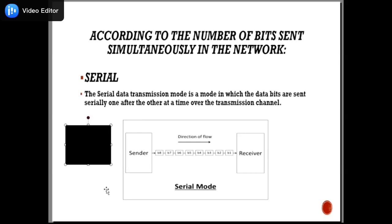According to the number of bits sent simultaneously in a network, transmission is divided into two parts: serial and parallel. In serial data transmission mode, data is sent serially one bit after another over the transmission channel. The data flows as B8, B7, B6, B5, B4, B3, B2, and B1, and the receiver receives it in serial mode. It needs only a single transmission line for communication. Data bits are received in synchronization with one another, so there is a challenge of synchronizing transmitter and receiver. Serial transmission takes several clock cycles to transmit the data stream, and data integrity is maintained by transmitting bits in a specified order. This mode is best suitable for long-distance data transmission when the amount of data being sent is relatively small.